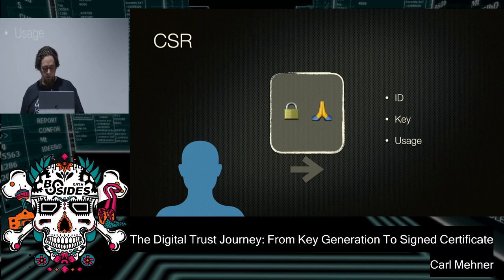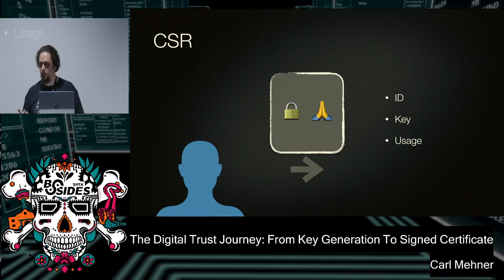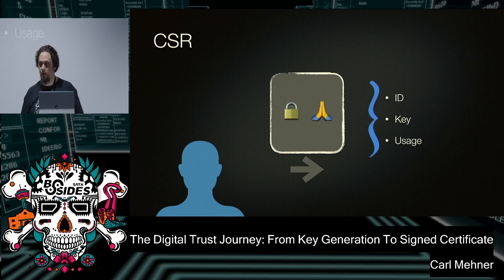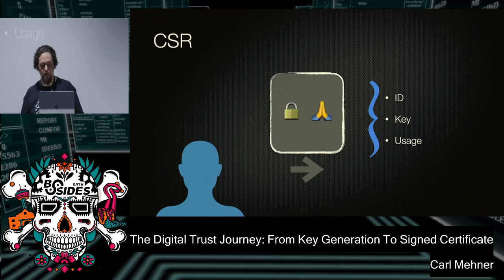The usage is anything that is any type of special privilege or use for the key — things like encrypting, signing, creating digital signatures, being used for TLS or for authentication to a system. The last part of the CSR is a temporary binding. It's not a trusted binding, but it is cryptographically strong, and it just shows that the machine that generated the private key is the one that created the CSR.